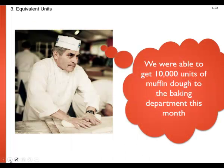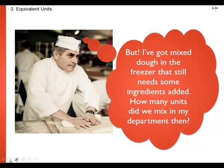Let's look at a dilemma our master baker is having. He knows he was able to get 10,000 units of muffin dough to the baking department this month — that is, he transferred 10,000 units of dough from mixing to baking. But he has some mixed dough in the freezer that still needs ingredients added. The dilemma is that he has an ending work in process balance for his department, but doesn't know the cost per unit since the number of units is still unknown.